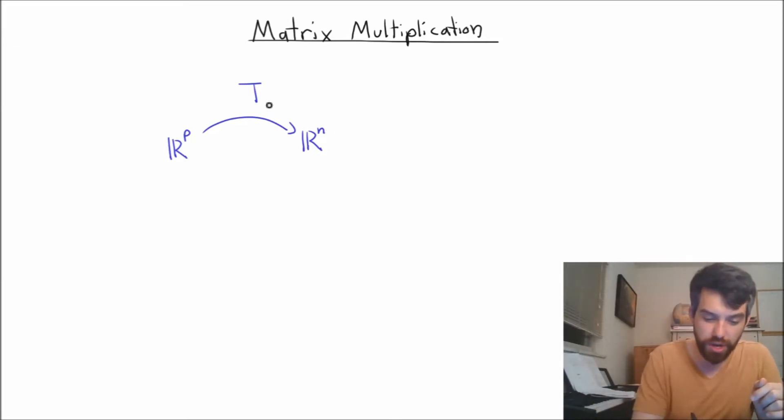Perhaps I'm going to denote this particular transformation T sub b. The reason is that every linear transformation we know can be written as a matrix transformation. So I'm claiming that for this transformation the matrix that goes along with it is a matrix called B.